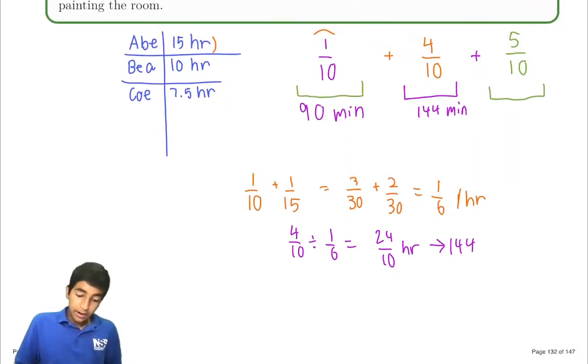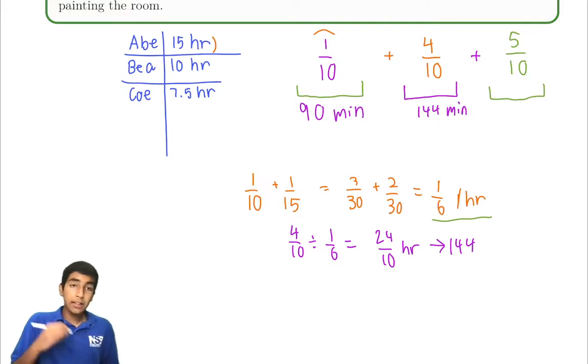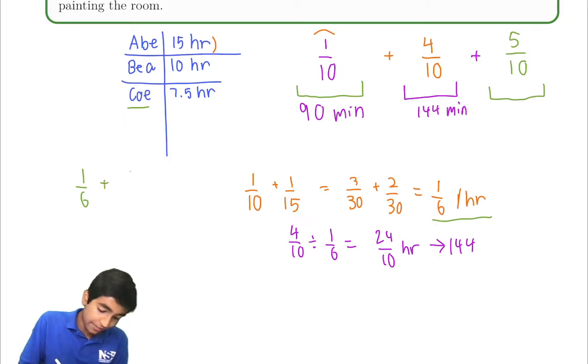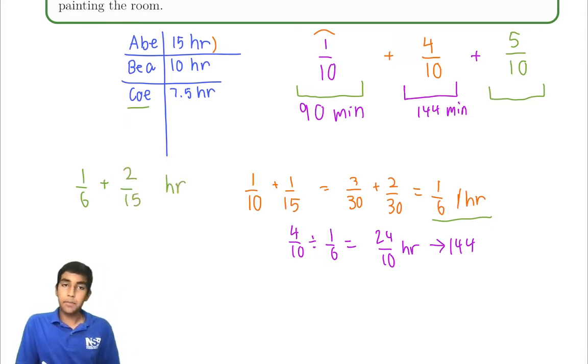Like I said earlier, Abe and Bea working together can paint a sixth of the room in an hour. And Coe can paint the whole room in 7.5 hours. Coe, in one hour, can paint 1 over 7.5 of the room, which is also equal to 2 divided by 15. So in one hour, all three of them working together paint 1 over 6 plus 2 over 15 of the room. Let's simplify this: equals 5 over 30 plus 4 over 30, which is 9 over 30 of the room in an hour.